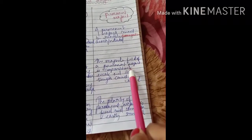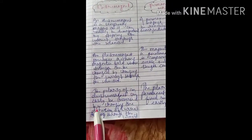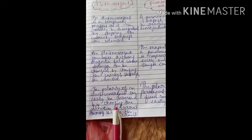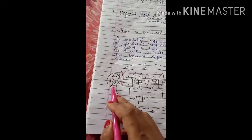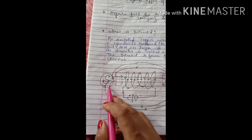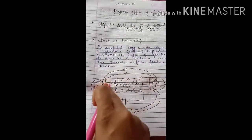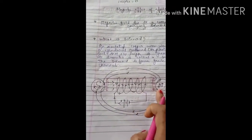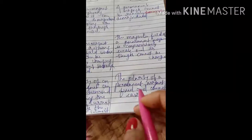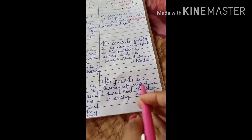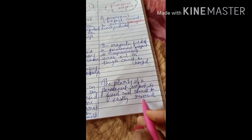The third and last point: the polarity of an electromagnet can be easily reversed by changing the direction of electric current through the solenoid. If the current is anti-clockwise, that end is the north pole; if current is clockwise, it is the south pole. So you can change the polarity by changing the direction of current. However, the polarity of a permanent magnet cannot be changed because a permanent magnet has fixed polarity and cannot be easily reversed.